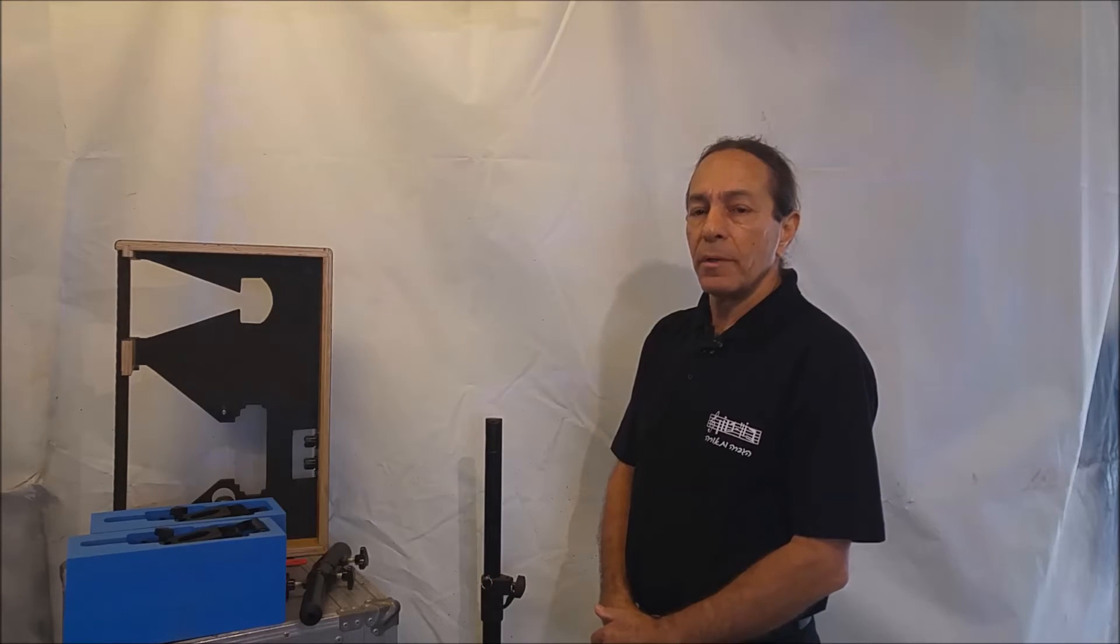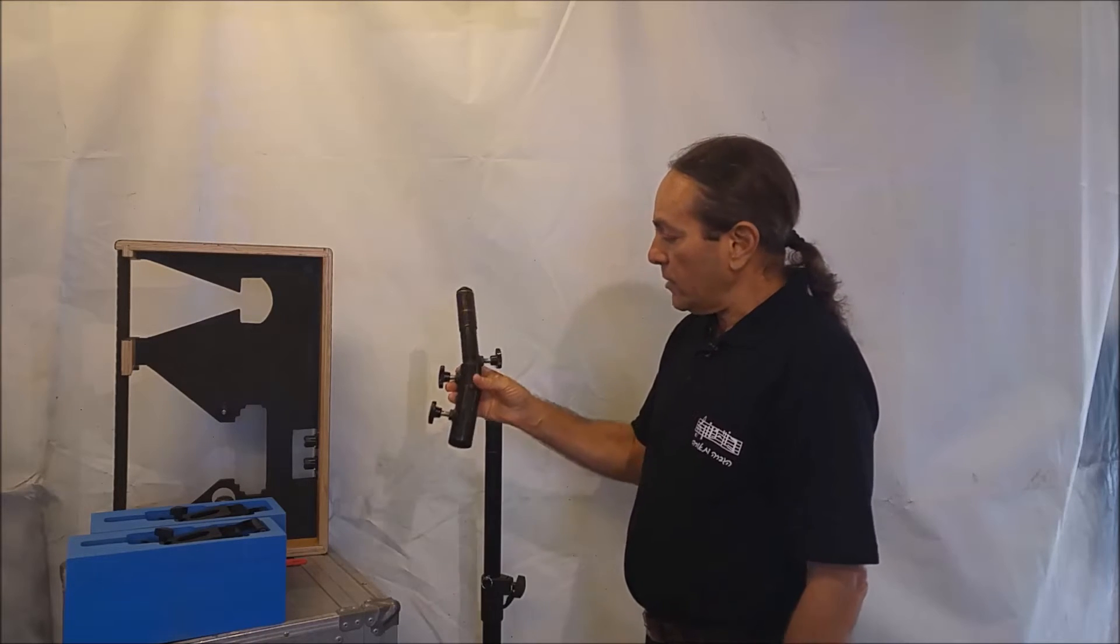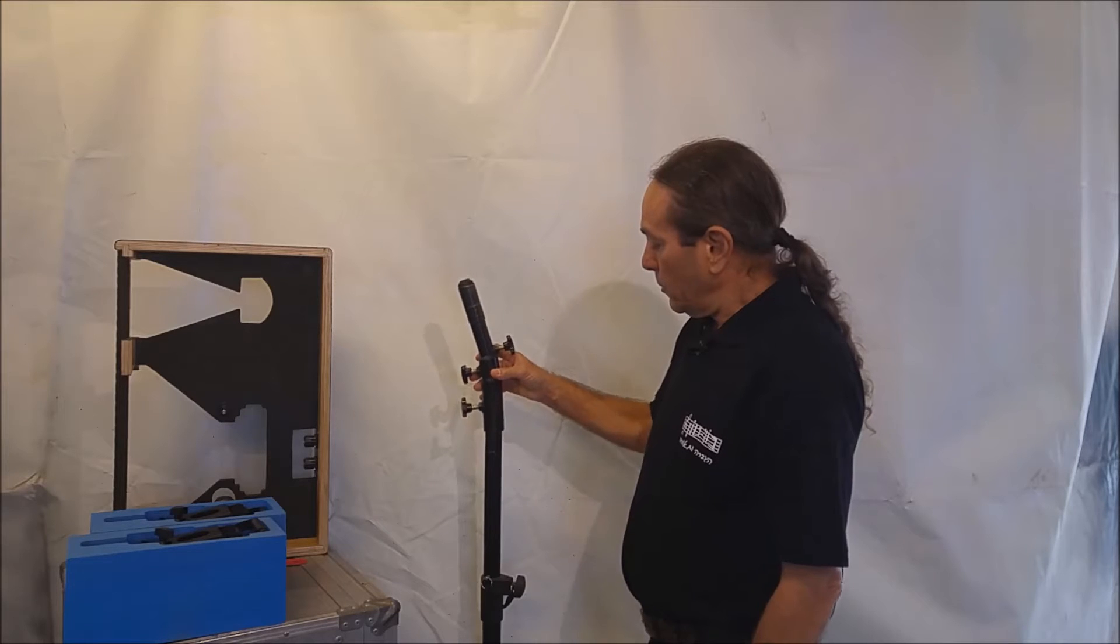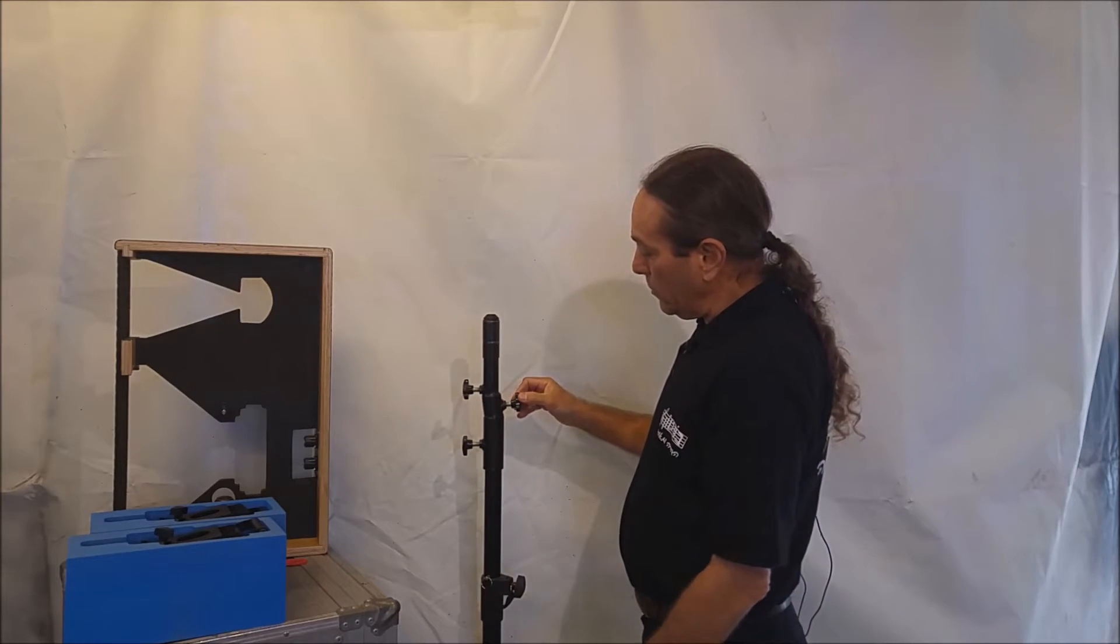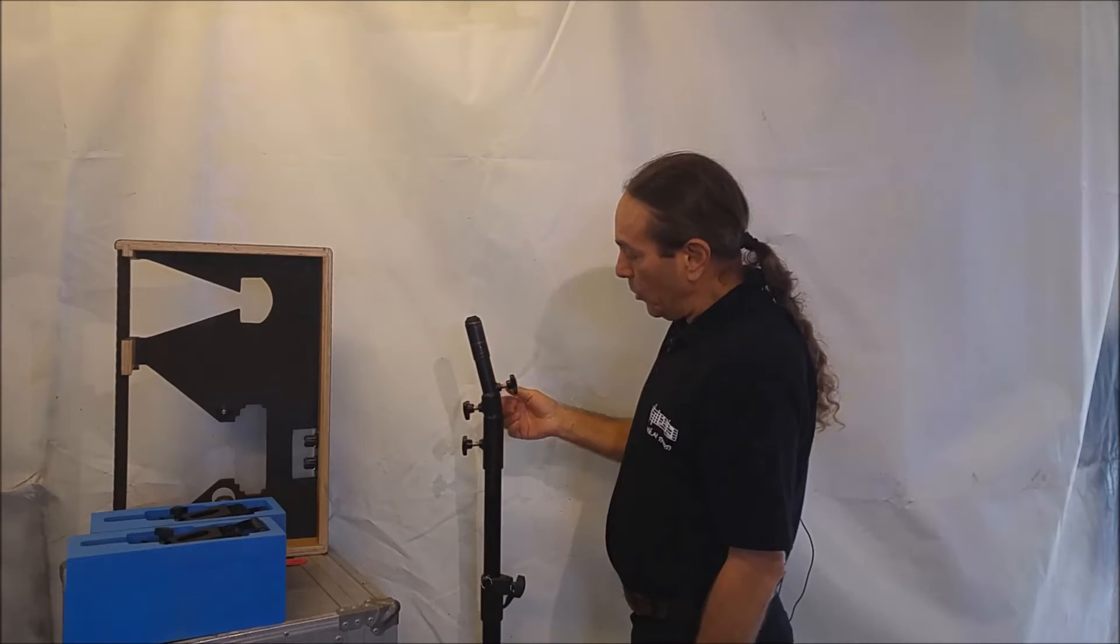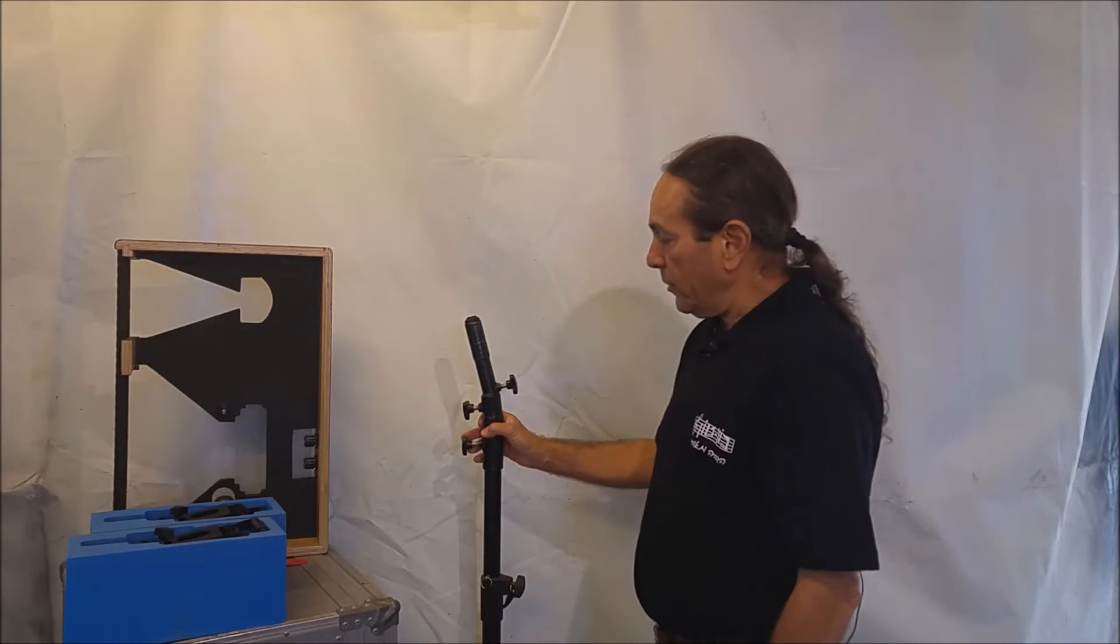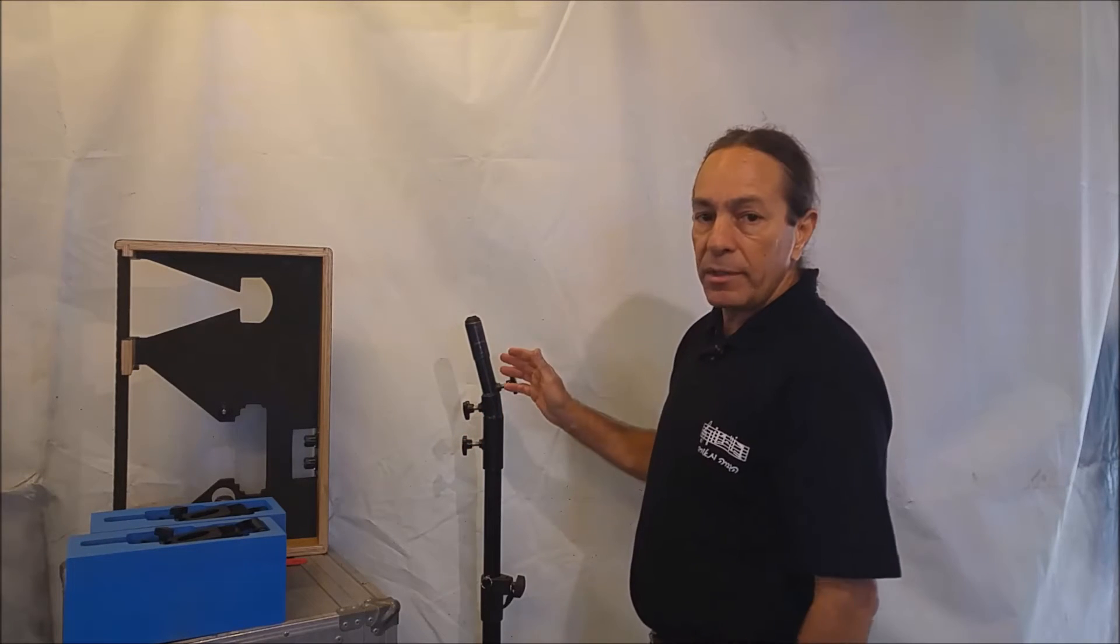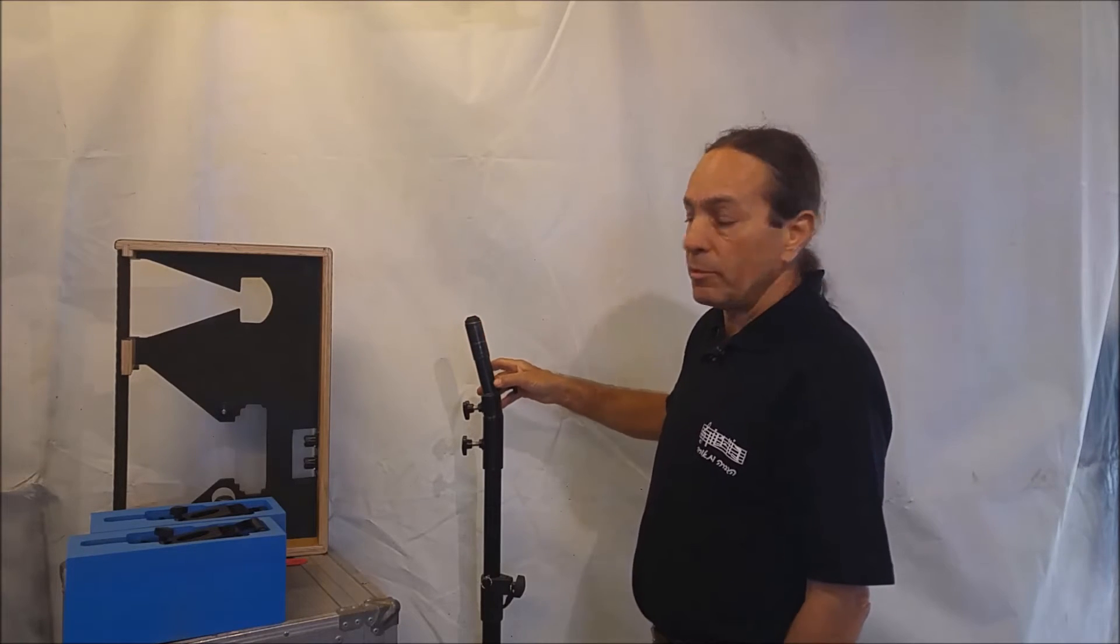One alternative to tilting loudspeakers is using a device of this type, in which we can achieve any angle that we need by rotating the two parts of the tilter against themselves. The problem with this device is that it's very awkward to manipulate, especially when there's a speaker mounted on top of it.